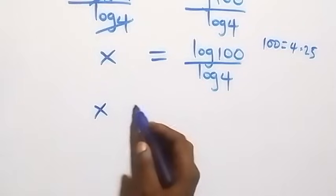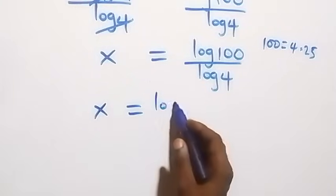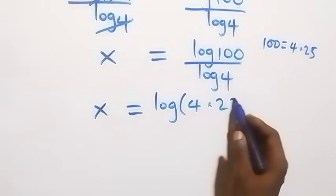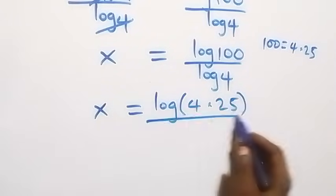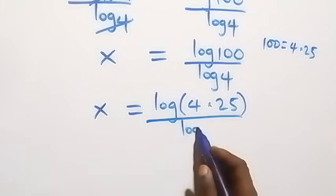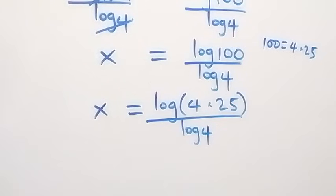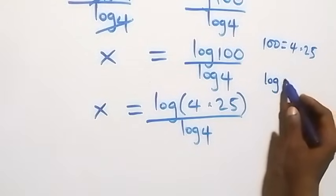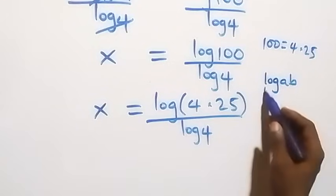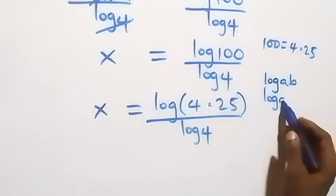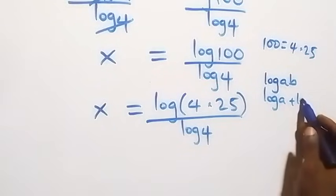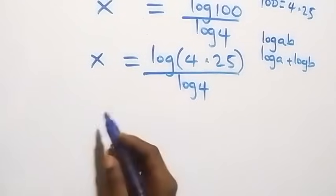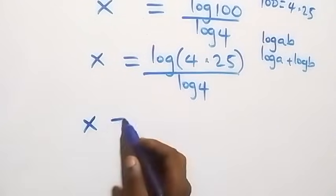We can express 100 as 4 times 25, so x equals log(4 × 25) over log 4. This follows the product rule of logarithms: log(a × b) equals log a plus log b.